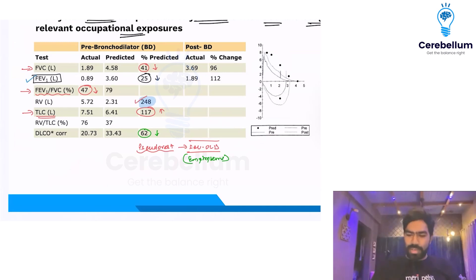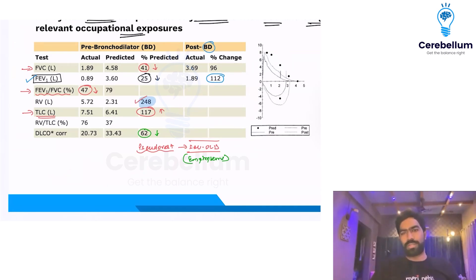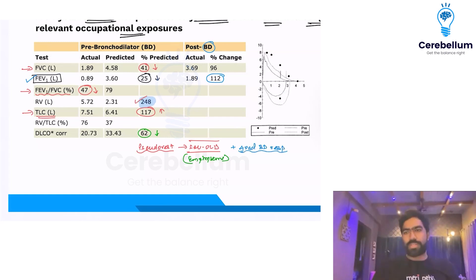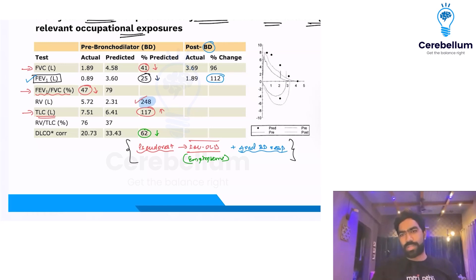Now look at FEV1 improvement after giving bronchodilator — FEV1 improves by 112%. This patient is having good bronchodilator responsiveness. So the complete wholesome diagnosis is: pseudo-restriction due to severe obstruction, the obstructive lung disease is emphysema, and this patient has excellent bronchodilator responsiveness.